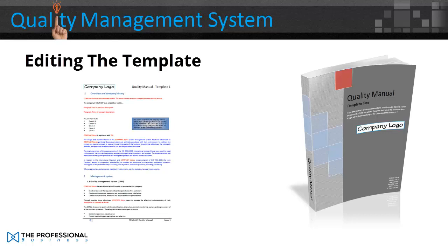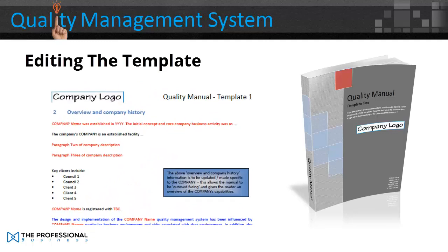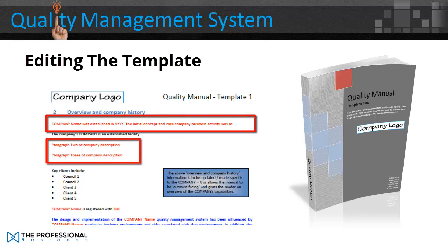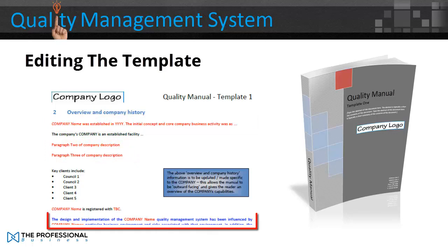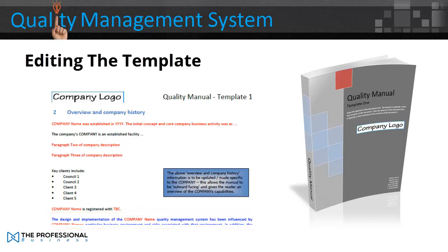You'll see that the Quality Manual has text in various colours. Red italic text should be edited specifically for your company with relevant information. The blue text indicates where changes and clarifications in relation to the ISO 9001 have been incorporated. Lastly, the text boxes show notes and information regarding that section. These can be deleted once the Quality Manual has been completed.